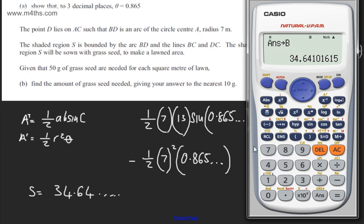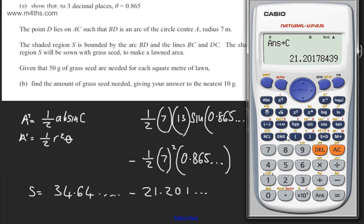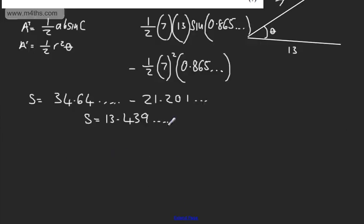Now I subtract away the sector area. That's 49 times the stored theta value of A, divided by 2, giving 21.201... I'll store this as C. Then doing B minus C gives 13.439... square metres for S. Since we need 50 grams per square metre, we multiply: 13.439... times 50.